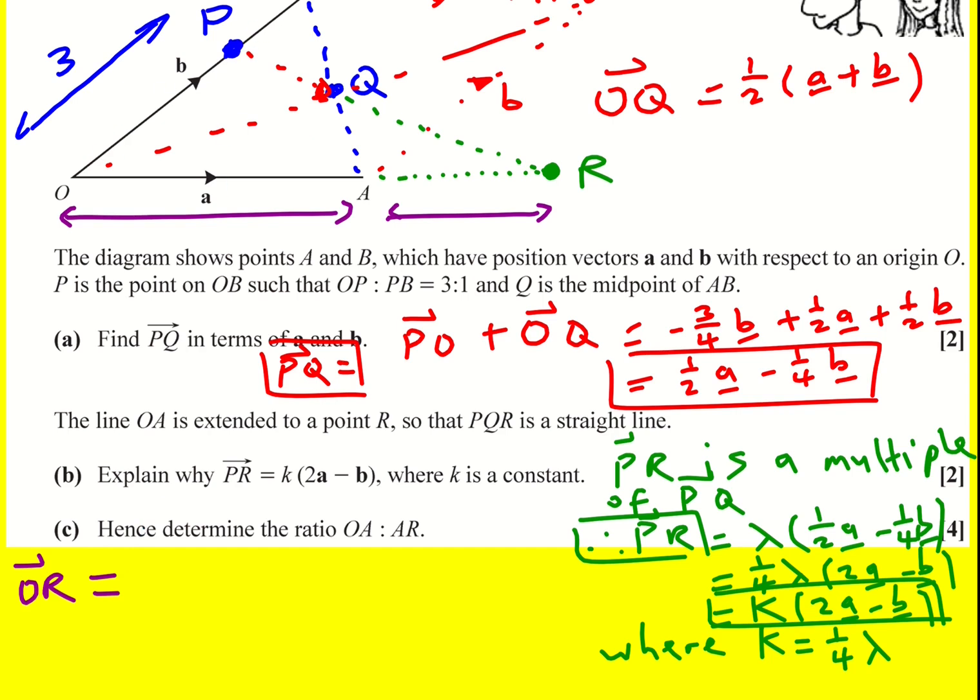So first up, OR is going to be OP plus PR. So it's going to be three quarters b plus that PR which was from previously k(2a - b). But here's the thing, OR is, we also know, is just a multiple of a because it's in the same direction. So in the answers, they just said it's a multiple of a.